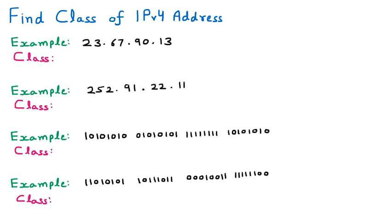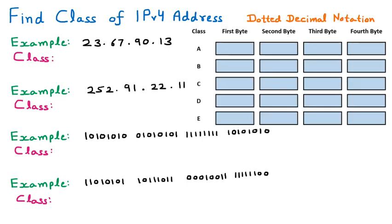We are going to find out the class of the IPv4 addresses. We have different examples given to us — the first two belong to dotted decimal notation. Here we have the table of dotted decimal notation. The range falls from 0 to 127, then 128 to 191, then 192 to 223, then 224 to 239, and finally 240 to 255. That is the range of our IPv4 classful addressing.